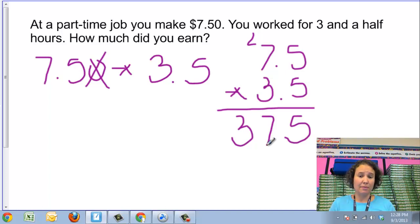Now I'm going to take that same top number, 75, and multiply it by the 3, which is in the tens place. When you multiply by a number in the tens place, we always want to put a zero down in the ones place first to show that there's nothing there.